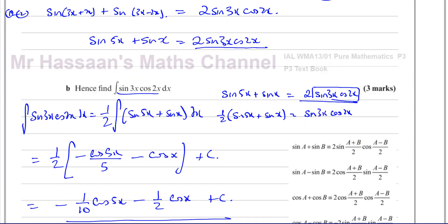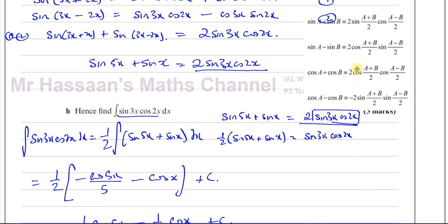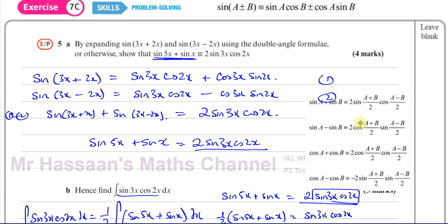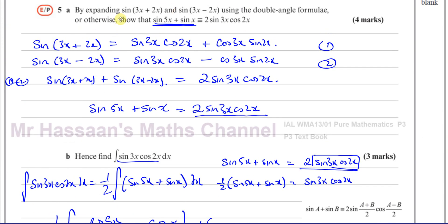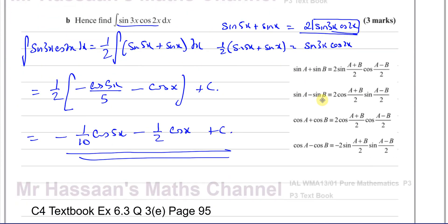What we've done here is essentially proved what are called the factor formulae. We could have answered the integration part almost directly without proving part a, by using the factor formulae which are in the formula book. Looking at the formula, if I want to split a product of sine times cosine, I look at the form that matches — sine·cosine gives a sum involving sine and sine. The formula says: sine((a+b)/2)·cosine((a−b)/2) = ½[sine(a) + sine(b)].